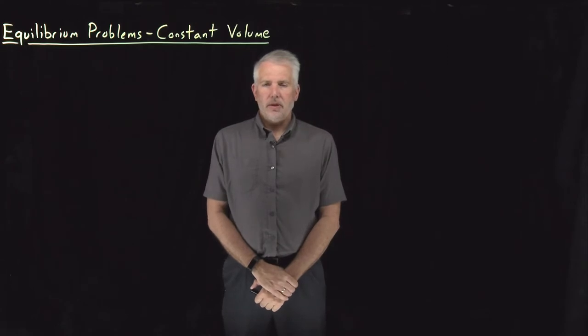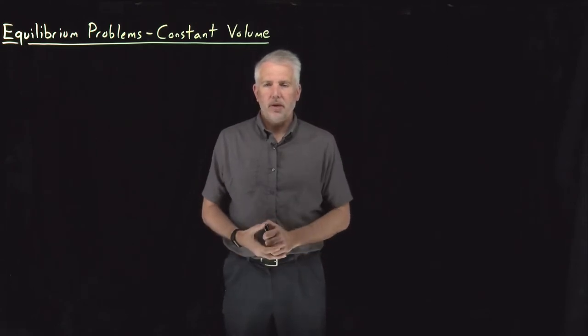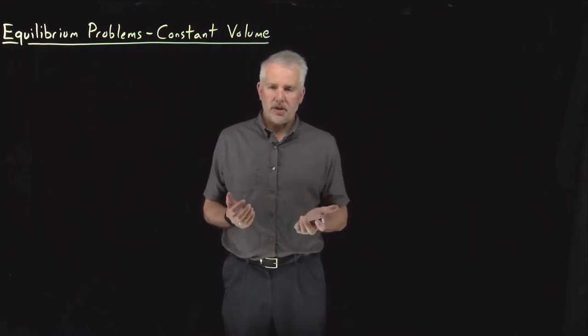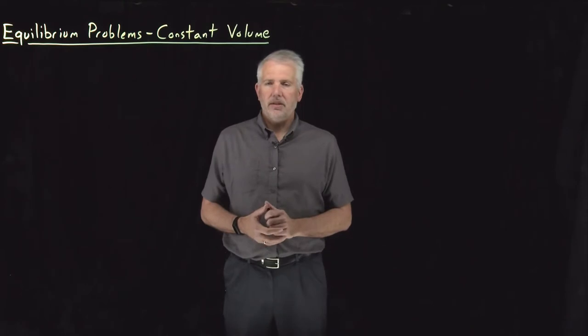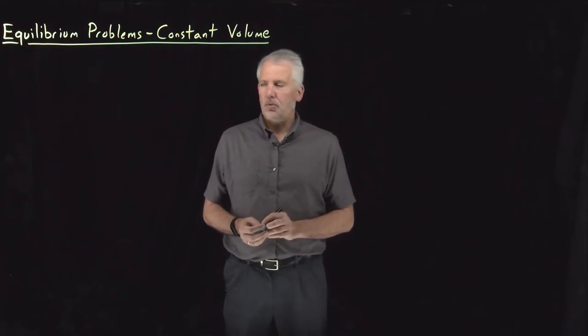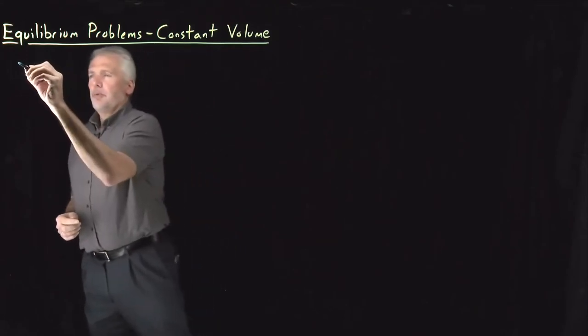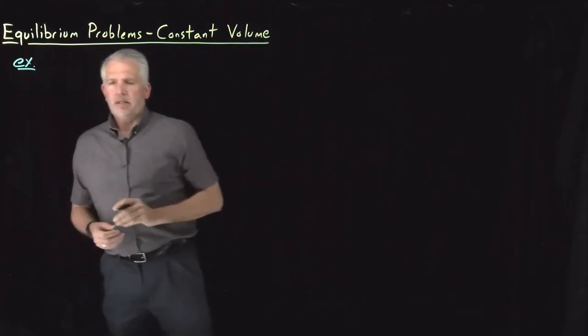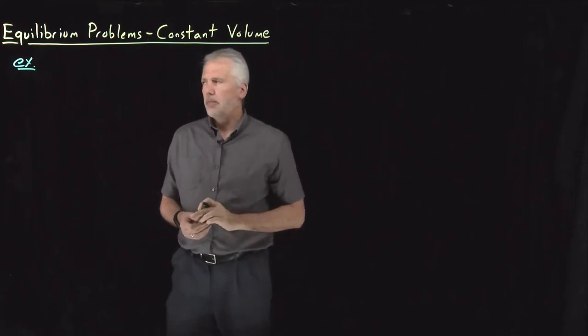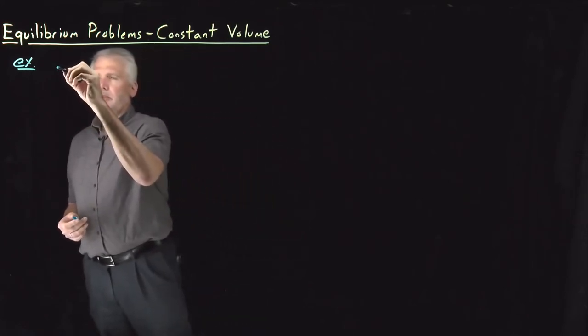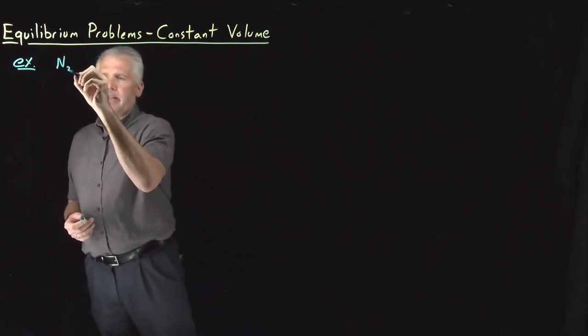All right, so one additional wrinkle that we need to consider in solving equilibrium problems is the fact that they work out a little bit differently when we try to solve them at constant volume rather than at constant pressure. So the easiest way to understand why that happens is to work an example or two. That's what we'll do.